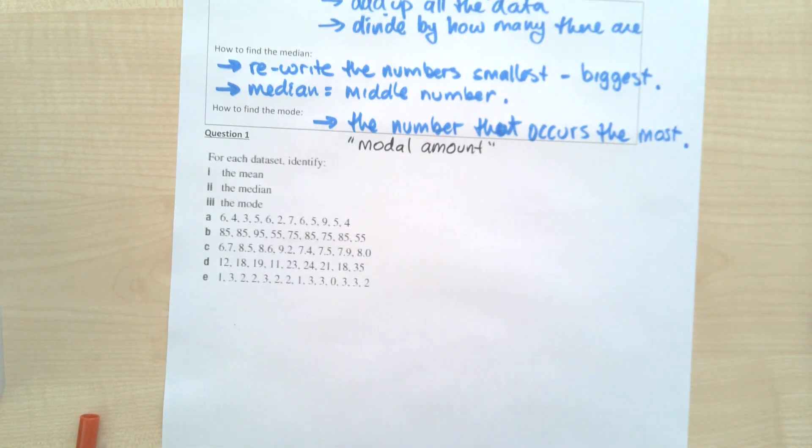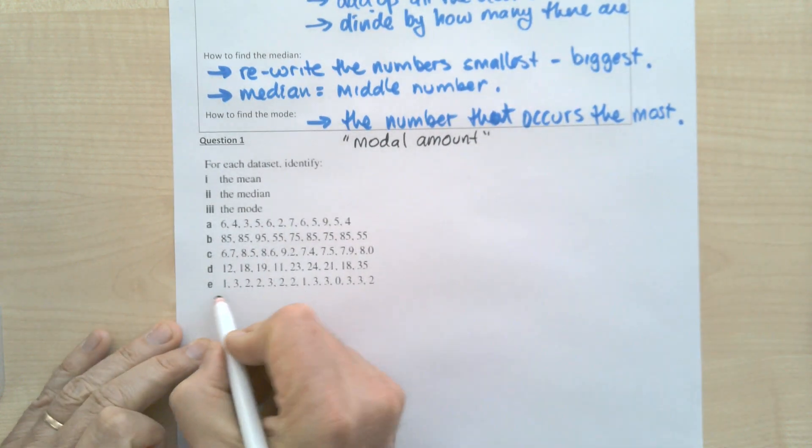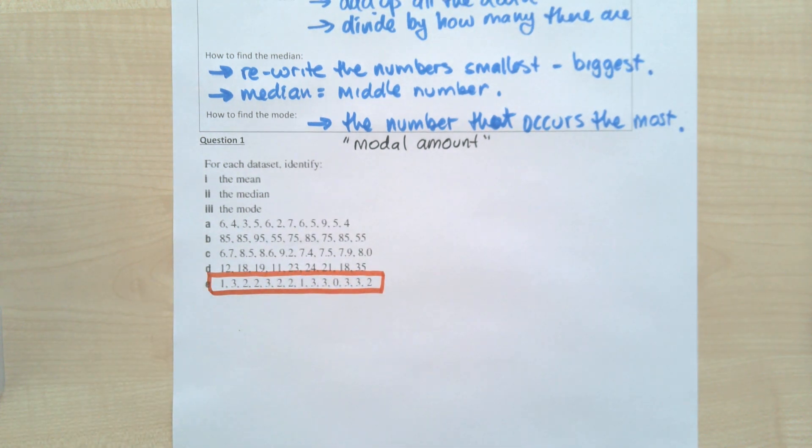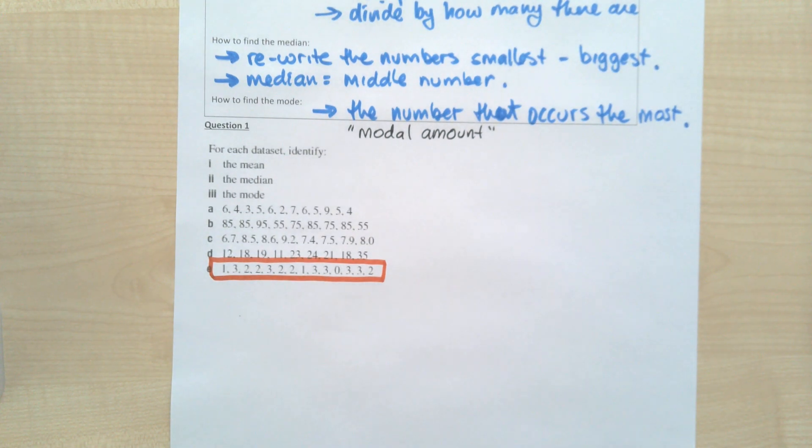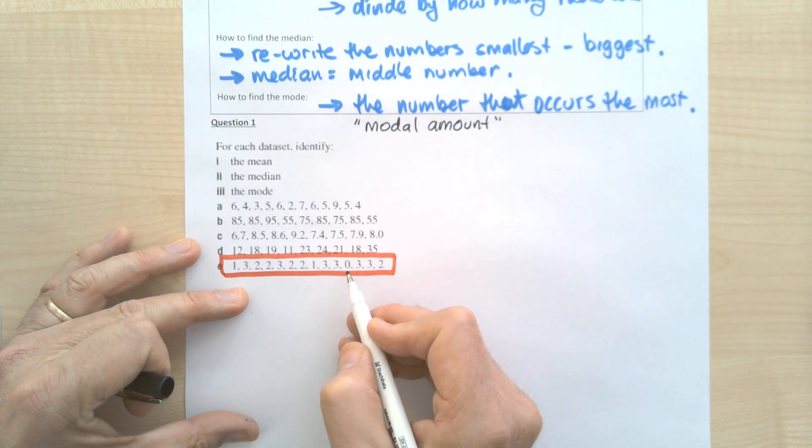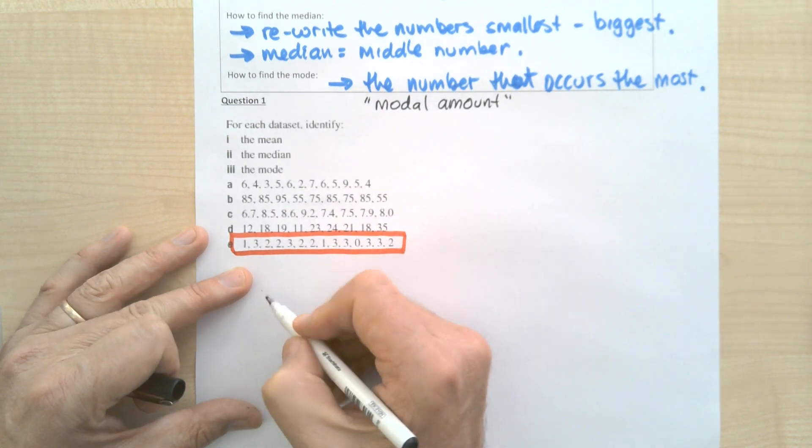Alright, so let's have a look at this last one here. This is page 22 of your workbook. I'm going to just focus on that. So I've got to find the mean, the median, and the mode. So first of all, I'm going to put them in from smallest to biggest. Now when you're doing that, it's really handy to cross out the ones that you've rewritten.